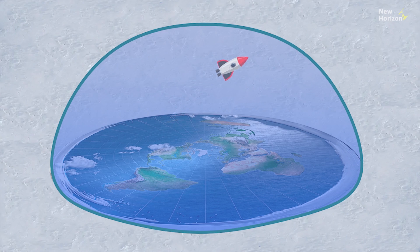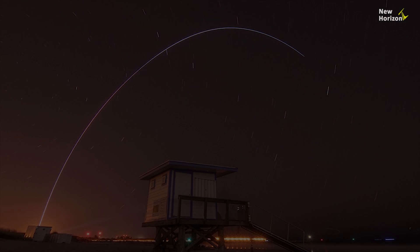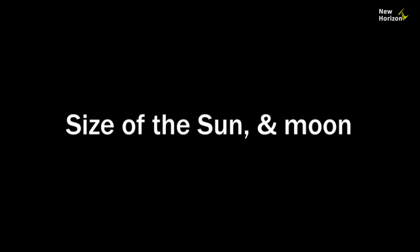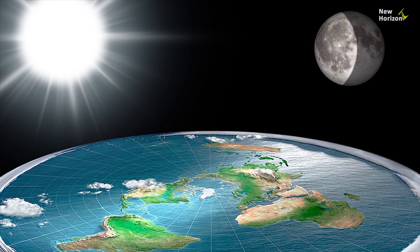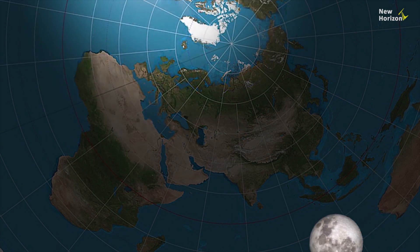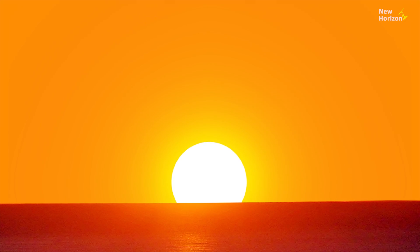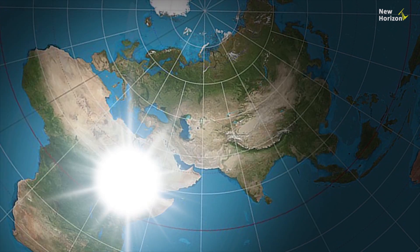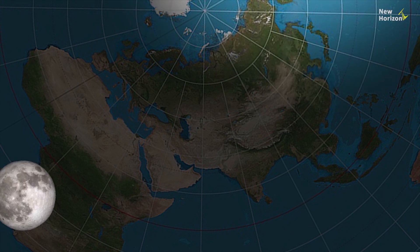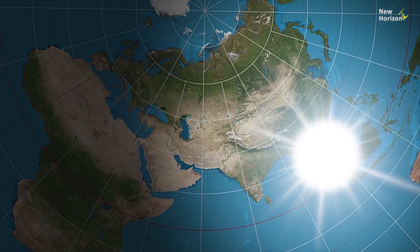Flat earth believers often say that no one can go to space due to the barrier of the dome. Flat earthers also believe that the Sun and moon are always present in the sky. They agree that the rising and setting are illusions, but present a strange logic that the Sun and moon start coming closer to us during rising and recede during setting.